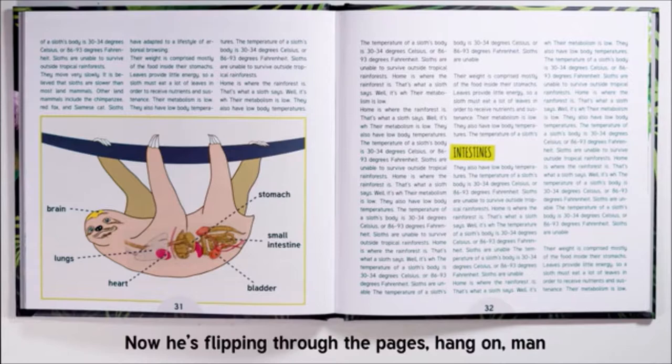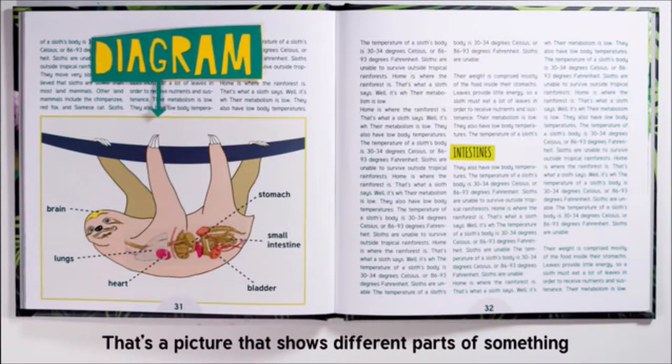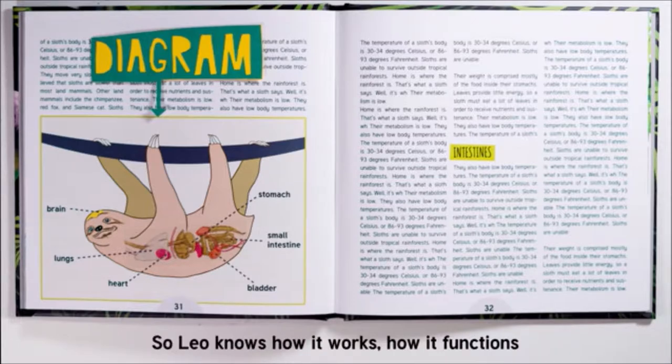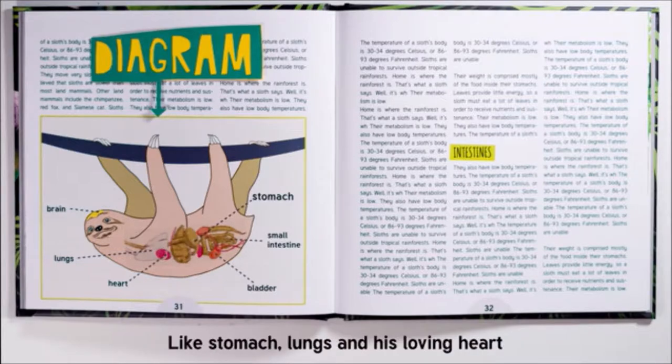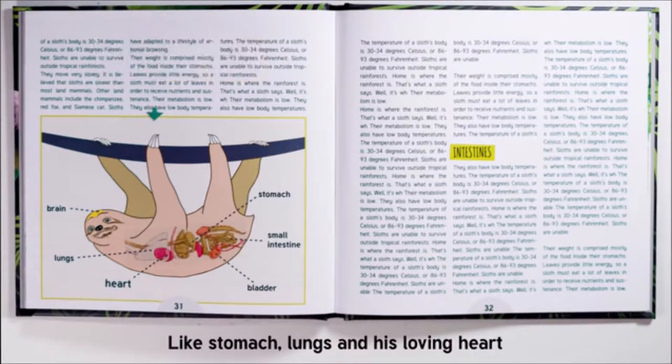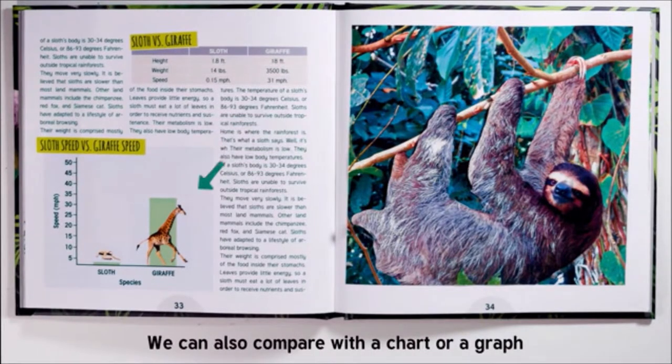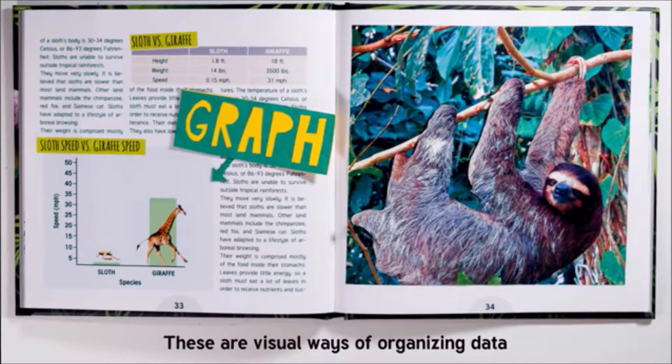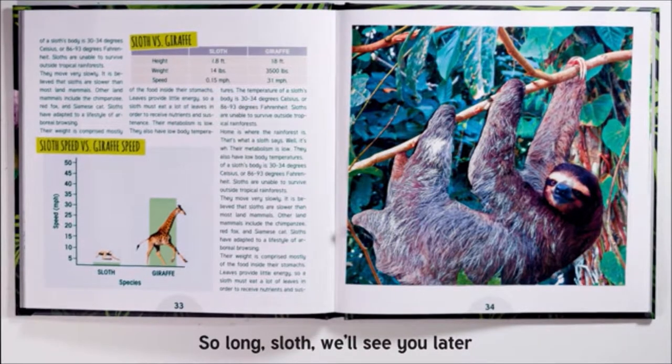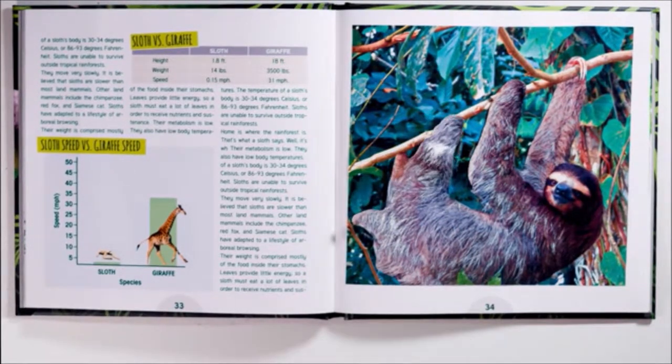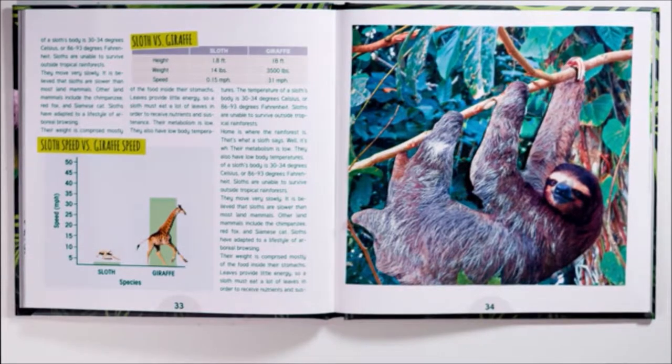Now he's flipping through the pages. He spots a cool image called a diagram. That's a picture that shows different parts of something so Leo knows how it works, how it functions. There are labels that point out different parts like stomach, lungs, and his loving heart. This table compares sloths to giraffes. We can also compare with a chart or a graph. These are visual ways of organizing data.